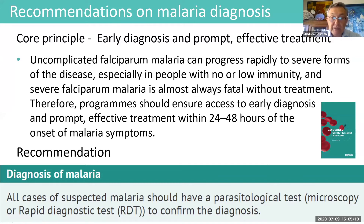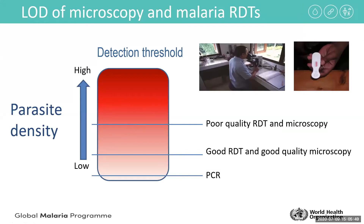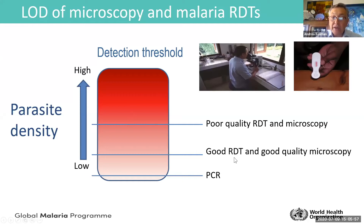Essentially, everybody should get a test before being treated, and early diagnosis should be done with either microscopy or a malaria rapid diagnostic test. When we compare the two, they are very equivalent in terms of diagnostic performance. Poor quality RDT and poor quality microscopy can only detect a high level of parasite density — probably above 500 parasites per microliter. With good RDTs and good quality microscopy, detection goes down to 50–60 parasites per microliter.